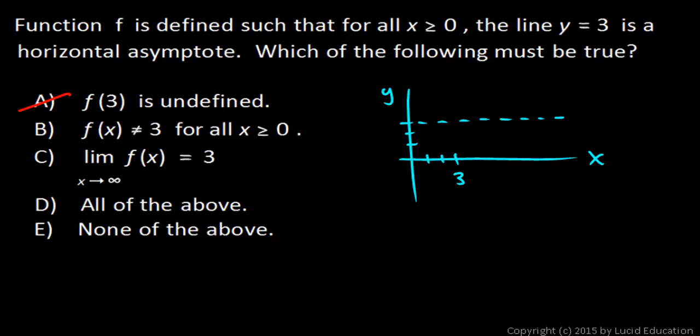If this is an asymptote, the graph approaches 3 without crossing 3 eventually, but it may cross this line before it makes its final approach. It may do something like this and cross the line y equals 3 and then approach it asymptotically. It may even cross it a few times and then approach it asymptotically.